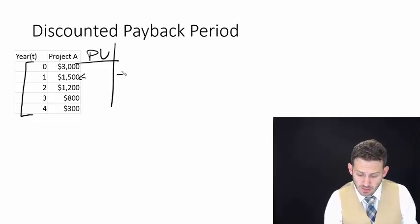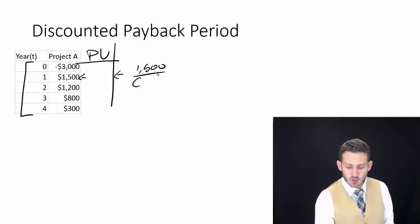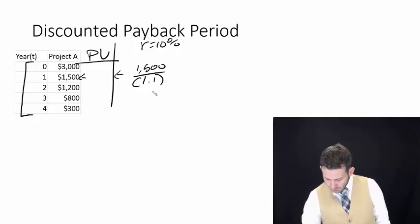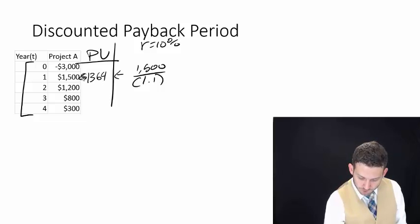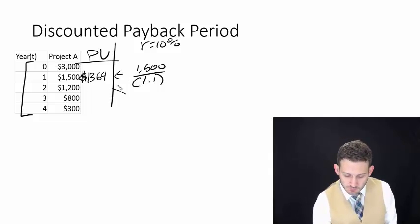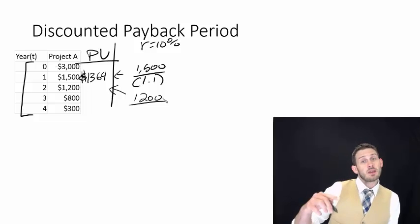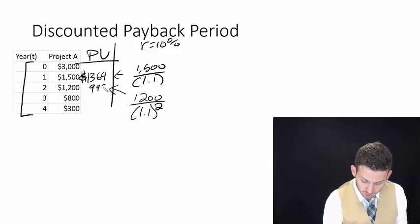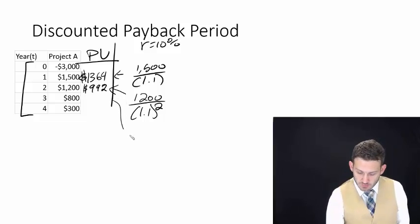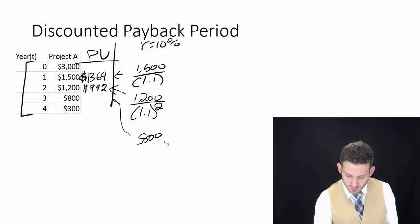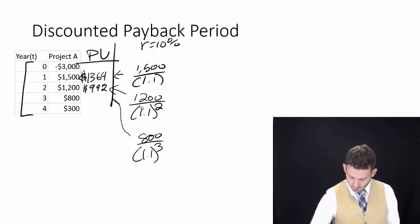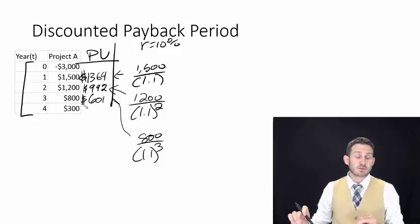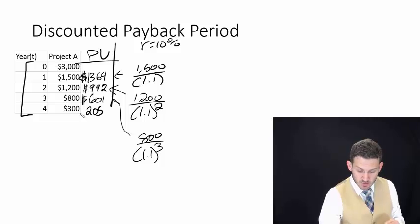$3,000 is still worth $3,000 to us right now. In year one, we discount this at 10%, dividing by 1.1, which gives us $1,364. Then $1,200 divided by 1.1 to the second power gives us $992. Year three: $800 divided by 1.1 to the third power gives us $601. And the last one ends up being $205. We can see the present value of each individual cash flow decreasing.